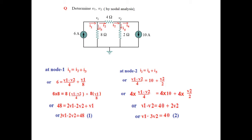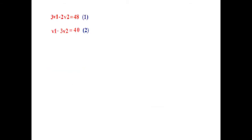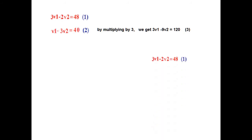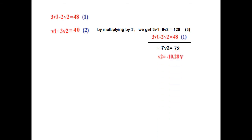These two equations will now be solved to find V1 and V2. We use the method of elimination. Since Equation 1 has 3V1, we multiply the bottom equation by 3 to get 3V1 minus 9V2 equals 120. Subtracting from Equation 1, the 3V1 terms cancel, giving us negative 7V2 equals 72.